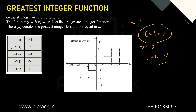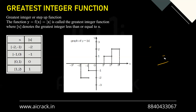For integers, the GIF function doesn't change its value. But for other real values which are not integers, it returns the greatest integer among all integers which are less than the input value. That was the basic definition.